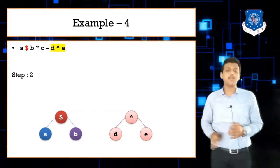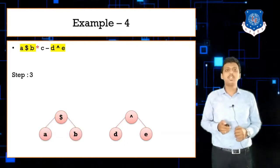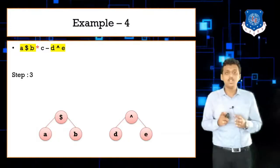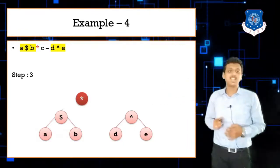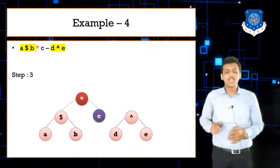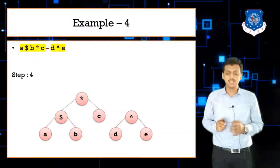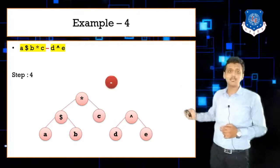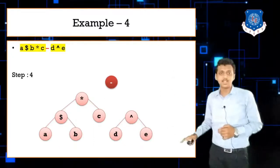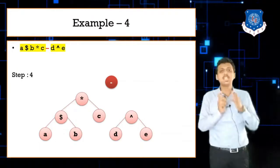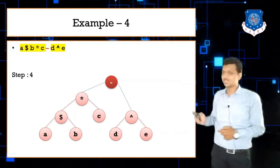Since a $ b and d ^ e are independent terms, they can be solved separately. Next, we solve star: the left link connects to the a $ b sub-tree and the right link connects to c. Then minus is solved: the left link connects to the top of the star tree, and the right link connects to the d ^ e sub-tree.